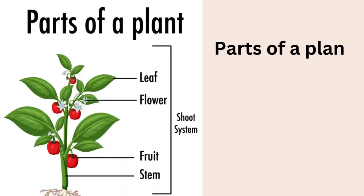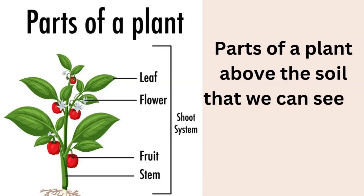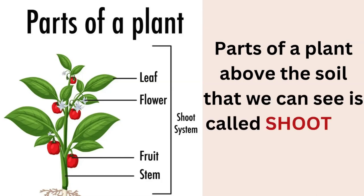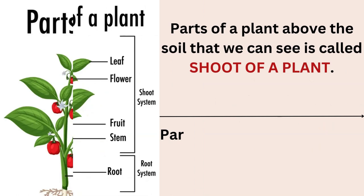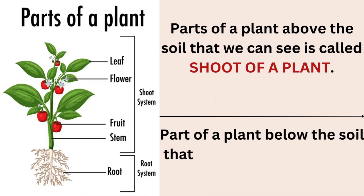Some parts are above the ground. Parts of a plant above the soil that we can see is called the shoot of a plant. The part of a plant below the soil that we cannot see is called the root of a plant.